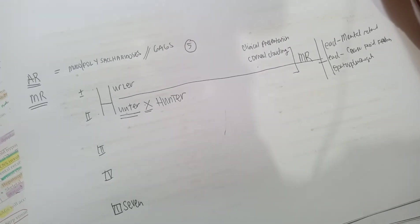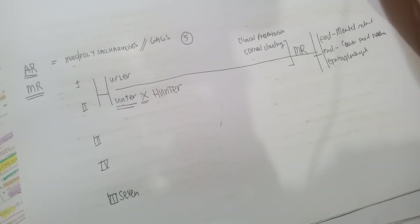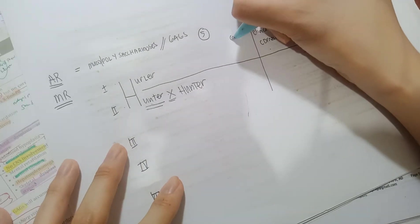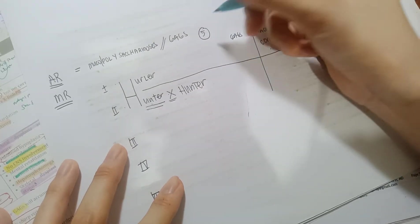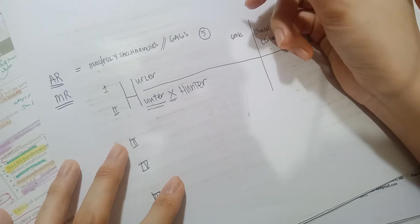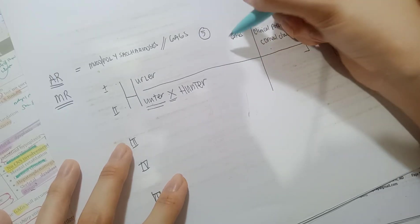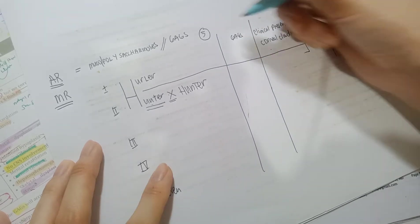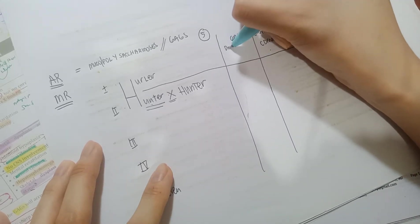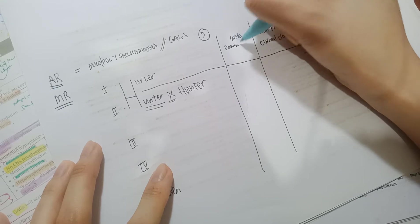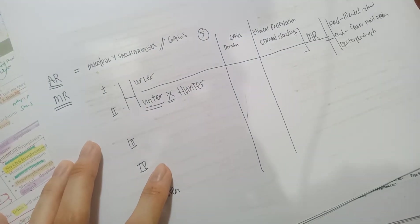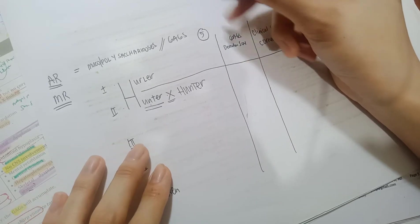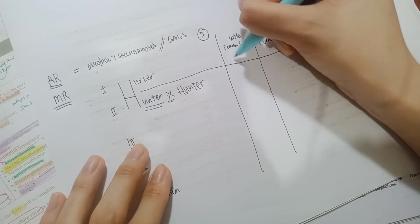The GAGs affected for both Hurler and Hunter are dermatan sulfate and heparan sulfate — both are the same for MPS1 and MPS2.